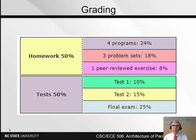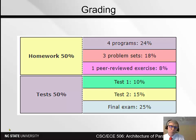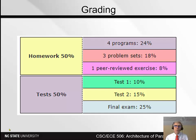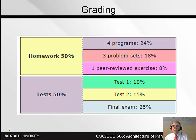Here's the homework for the semester: there are going to be 4 programs, 3 problem sets, and 1 peer-reviewed exercise. Together they add up to 50%. The tests also add up to 50% — the first test is 10% of your grade, the second is 15%, and the final exam is 25%. The reason for weighting it that way is it sometimes takes people time to get acclimated. We're going to be doing exams in Gradescope online this semester.